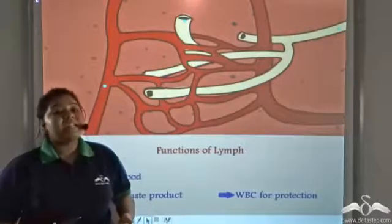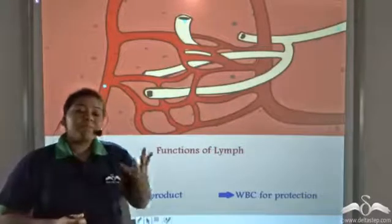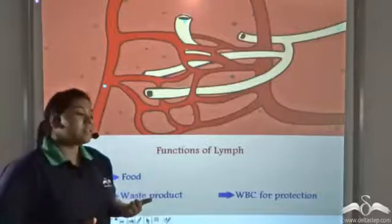How does lymph transport white blood cells if white blood cells are also bigger cells? This is because white blood cells have a special feature of changing their shape. They are very flexible and can easily squeeze through the narrow lymph vessels, and so can be transported to those portions of the body where blood vessels do not reach.